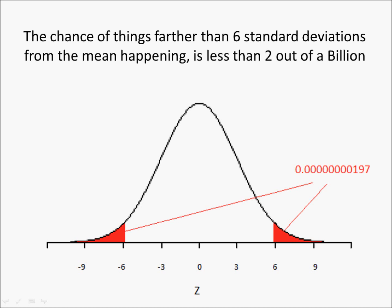The chance of things farther than six standard deviations from the mean happening is less than 2 out of a billion. So these red areas, which are farther than 6 standard deviations from the mean, have a very minimal chance of happening — very close to zero.